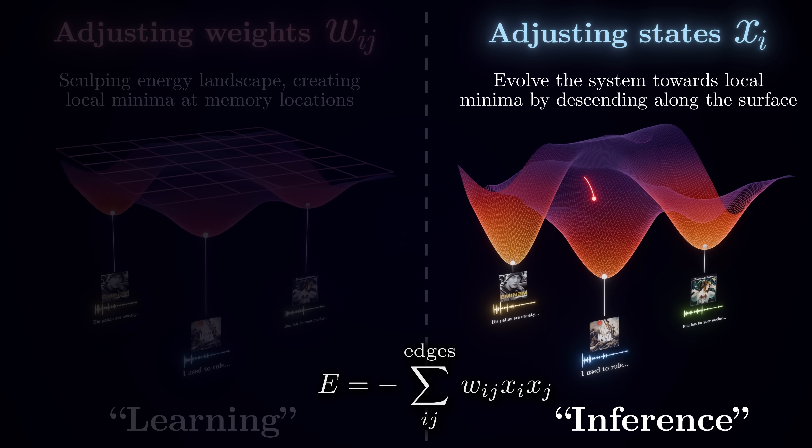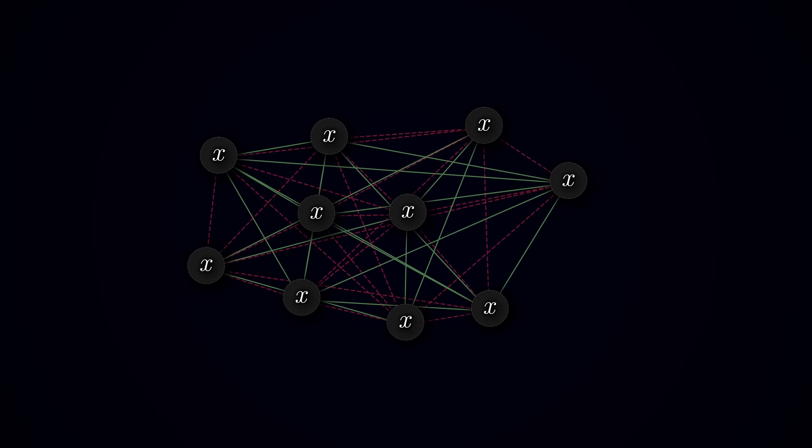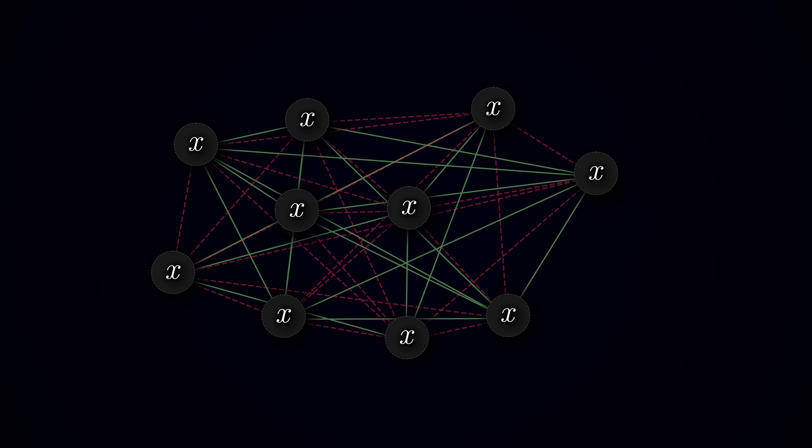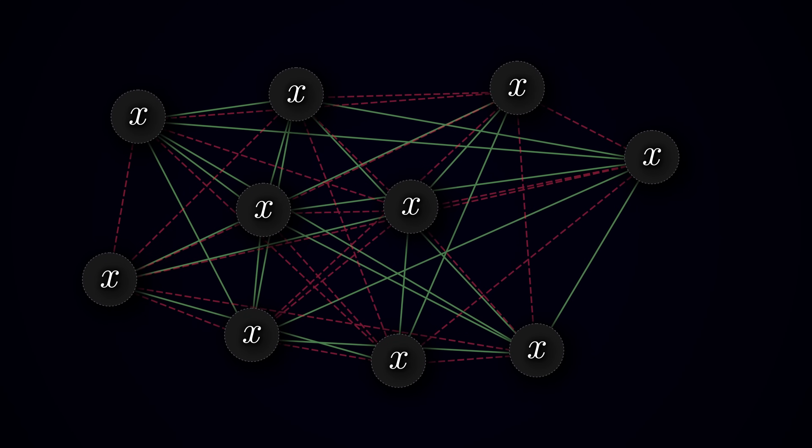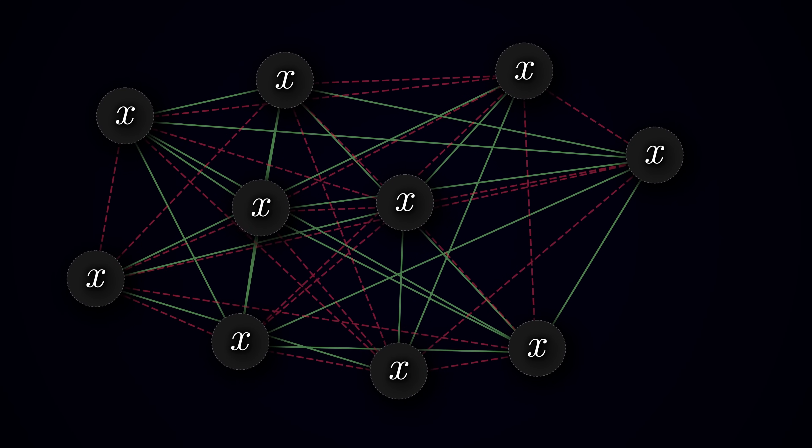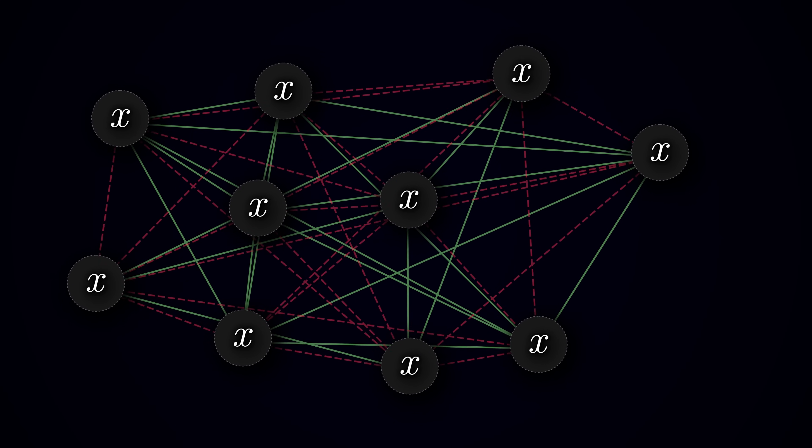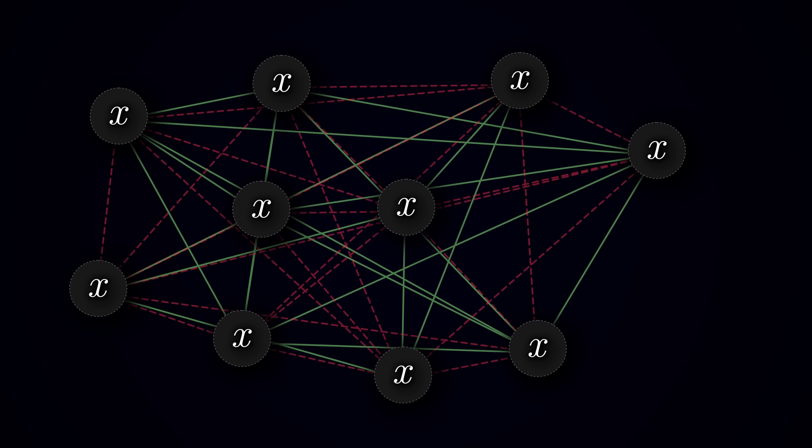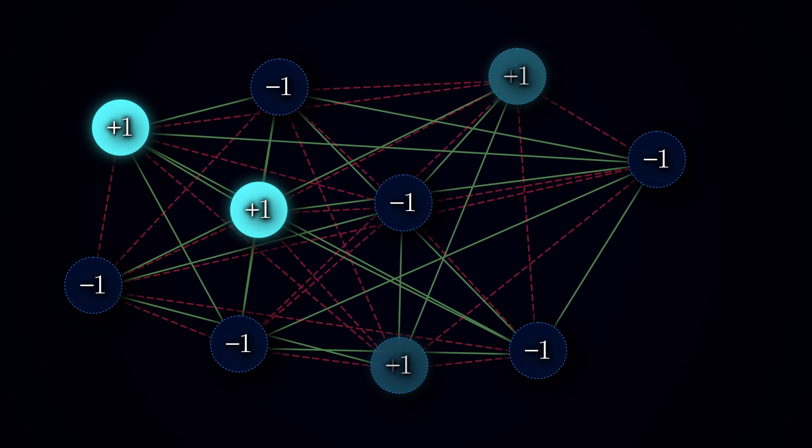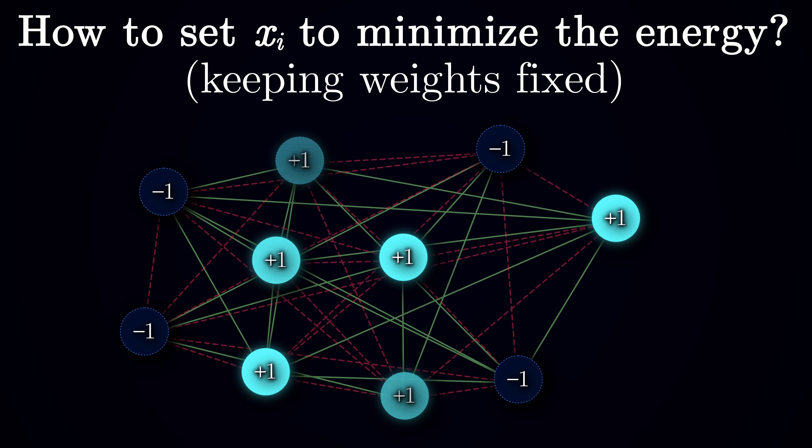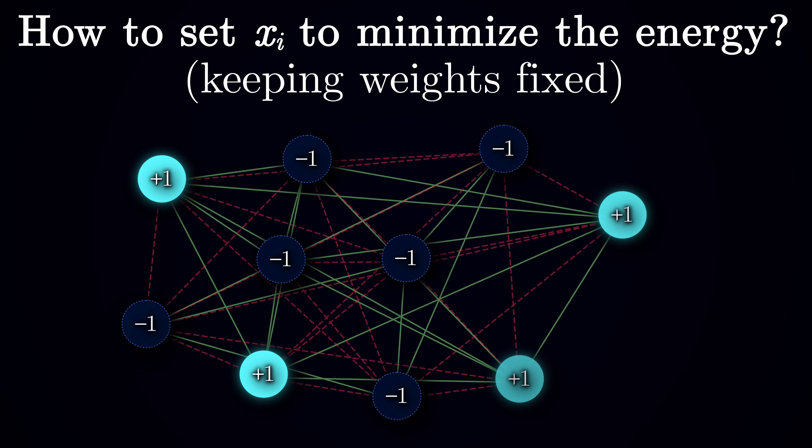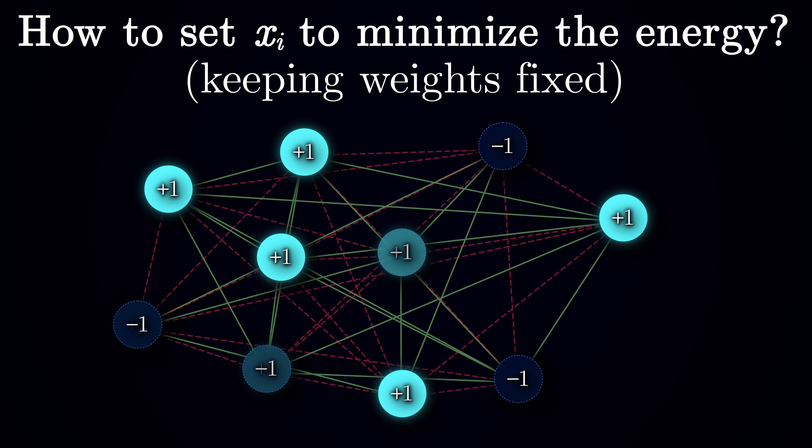Let's take a look at inference first. Suppose for a second someone has already set the weights w and hands us the backbone of the network. The neurons themselves, with all the connection weights. However, the exact configuration of states, which neurons are active and which are silent, is unknown. The question then becomes, how do we find the state pattern that would minimize the total energy?